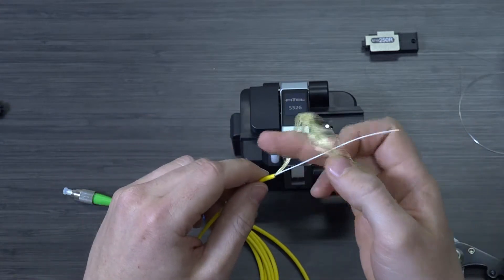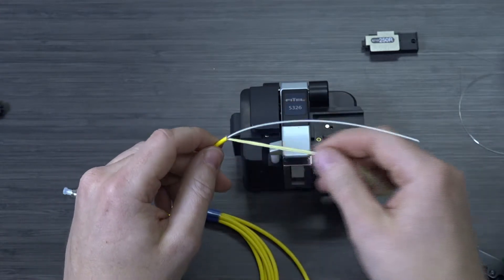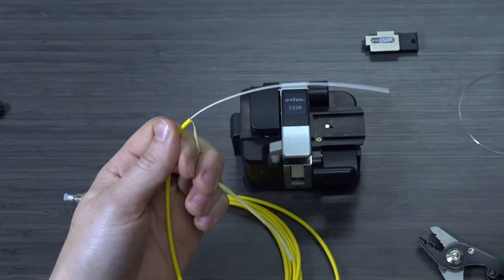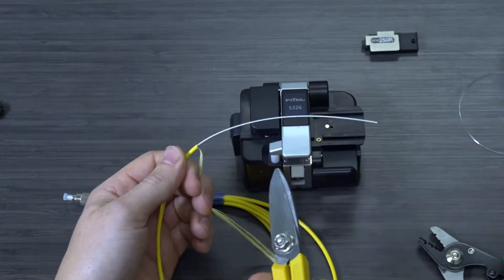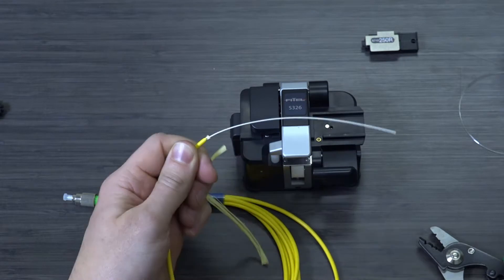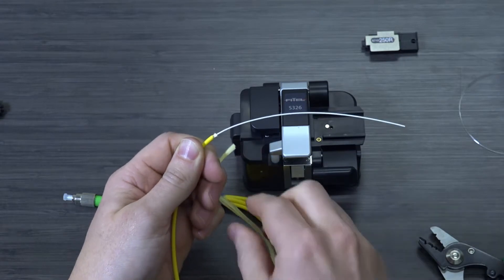So this then reveals the next two layers. There's kind of this Kevlar strand reinforcement. So we're going to use some Kevlar scissors to cut that away so it does not get in the way. So we have Kevlar scissors for that purpose. Place that aside.